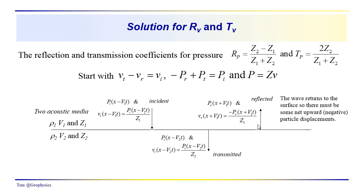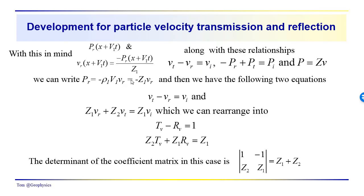The net particle displacement for the up-going wave is in the negative x direction, so v_r — the reflected particle velocity — should be negative of the pressure wave amplitude divided by the impedance. We have a sign difference here that we also have to keep track of. This is often where one can run into difficulty when working through this problem: just keeping track of the signs.